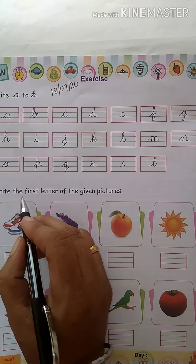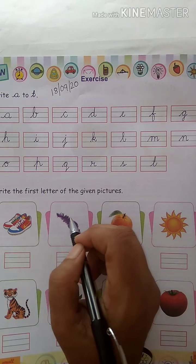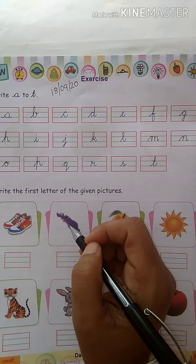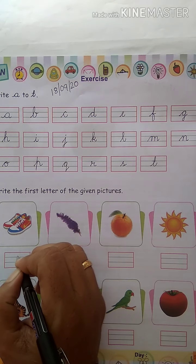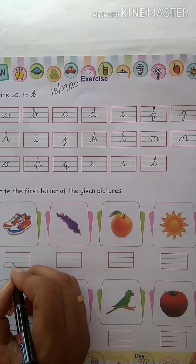Write the first letter of the given picture. We will write the letter of the given picture. Shoes. Shoes is a sign. S for shoes. S.